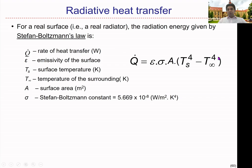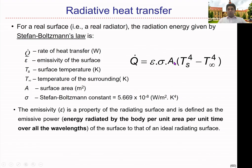So there is heat transfer between a heat source and the surrounding. The surface of the heat source has temperature Ts and the surrounding has temperature T-infinity. We have Ts to the power of 4 minus T-infinity to the power of 4. That is what we call the Stefan-Boltzmann law, and we can use this to calculate radiative heat transfer. The emissivity is a property of a radiating surface and is defined as the emissive power of the surface to that of an ideal radiating surface. An ideal radiating surface has emissivity of 1. Emissive power means the energy radiated by the body per unit area per unit time over all wavelengths.